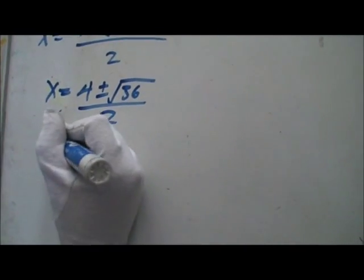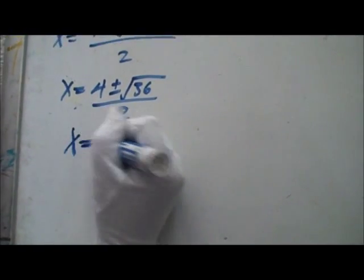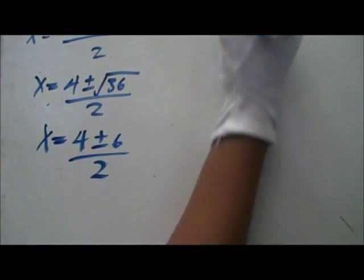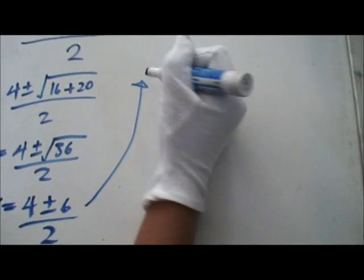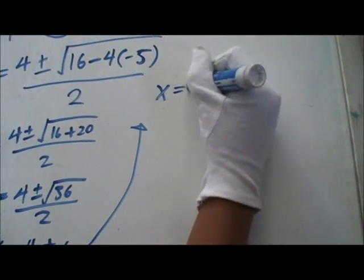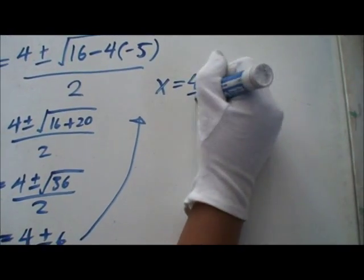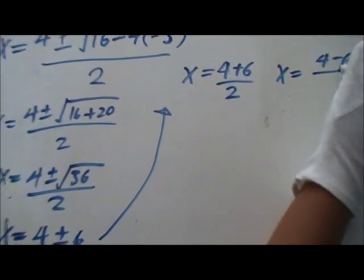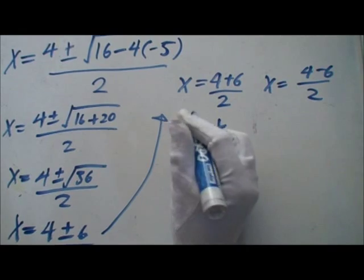The square root of 36 is 6, so x equals 4 plus or minus 6, over 2. Now, you move this into two equations. x equals 4 plus 6, over 2, and x equals 4 minus 6, over 2.